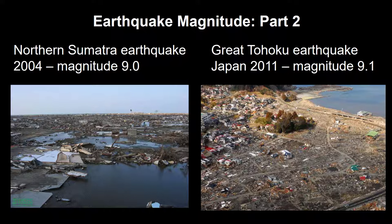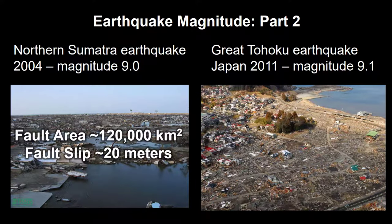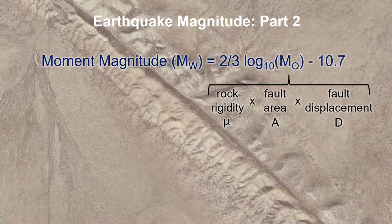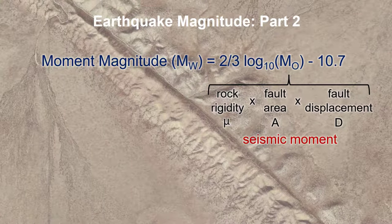For example, two mega earthquakes of similar size both occurred on subduction zones and resulted in widespread devastation. The Northern Sumatra earthquake featured a large rupture surface and a significant amount of fault slip. In contrast, the Tohoku earthquake compensated for a smaller rupture area by generating more fault slip than had ever been recorded for any other earthquake. The rupture area, displacement, and rigidity contribute to a value known as the seismic moment.